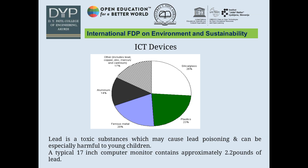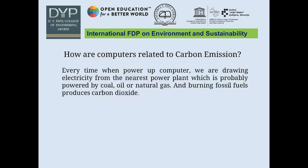How are computers related to carbon emissions? Every time we burn fossil fuels like gas and coal, CO2 is released into the atmosphere. In a natural carbon cycle, CO2 is reabsorbed by plants and trees. When we power up a computer, we draw electricity from the nearest power plant, which is probably powered by coal, natural gas, or oil. Burning these fossil fuels produces carbon dioxide.